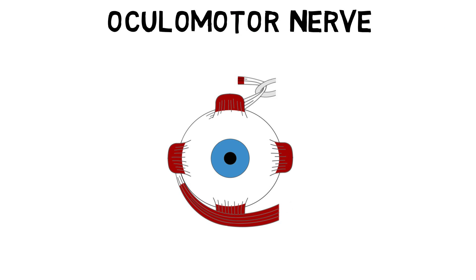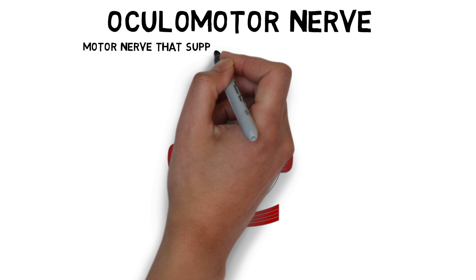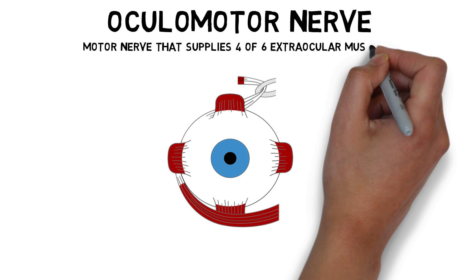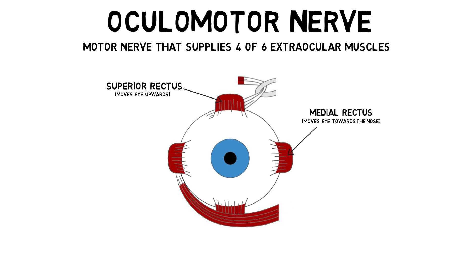The oculomotor nerve is responsible for supplying four of the six extraocular muscles: the medial rectus, which moves the eye towards the nose; the superior rectus, which moves the eye upwards; the inferior rectus, which moves the eye downwards; and the inferior oblique, which moves the eye up and out.